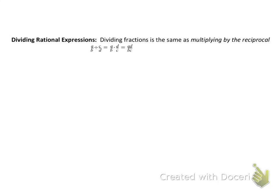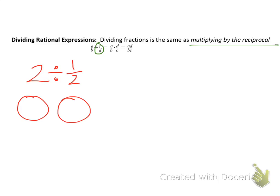Finally, let's look at dividing rational expressions. Dividing fractions is the same as multiplying by the reciprocal. It's important that you change the division to multiplication and flip the second fraction. For example, 2 ÷ 1/2 — like cutting 2 pies in half — gives 4 pieces. Change division to multiplication and use the reciprocal of the second fraction: 2 × 2/1 = 4.